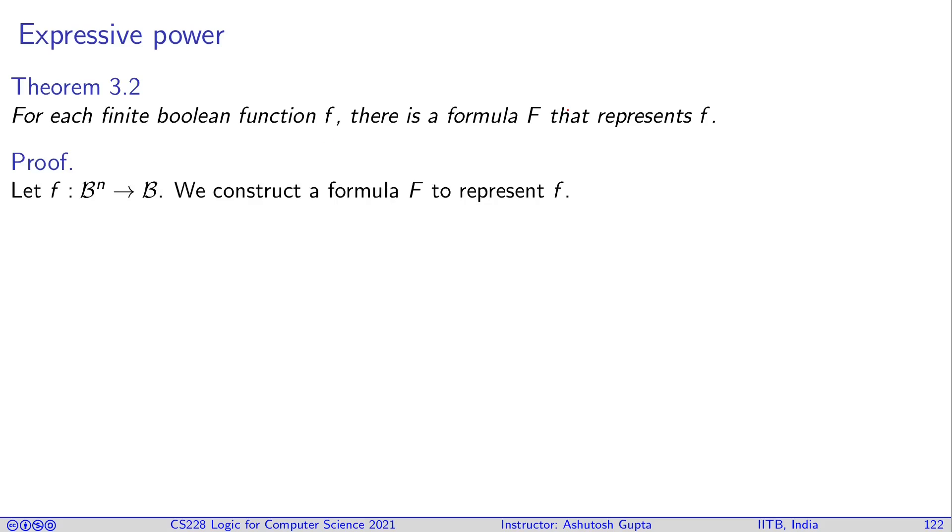Let's see how we can do that. Choose some Boolean function which takes n variables as input and produces one bit of output. Now we're going to construct formula F that will represent function f. Let me introduce some notation: pi superscript 0 represents not pi, and pi superscript 1 is the variable pi itself.